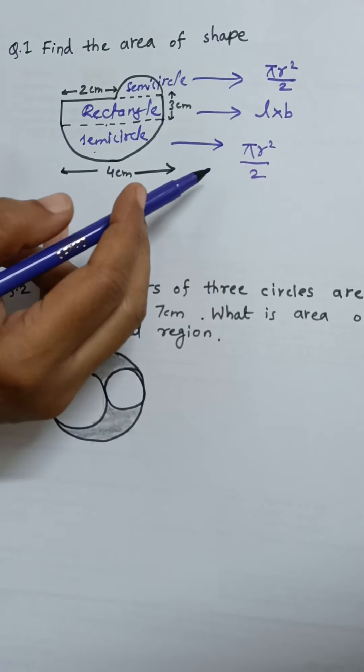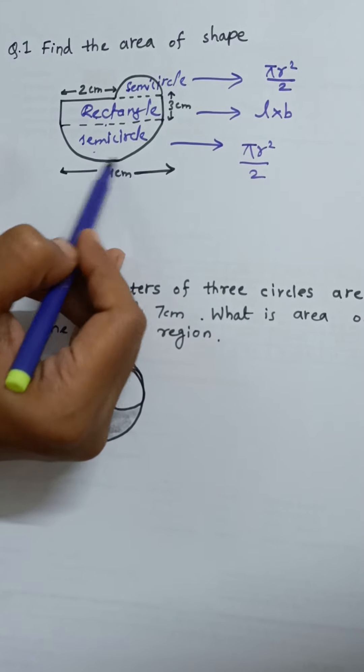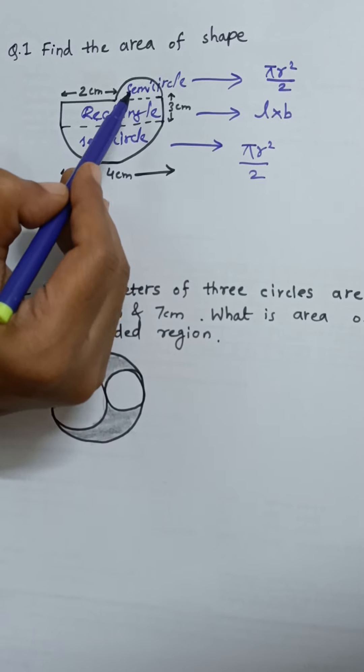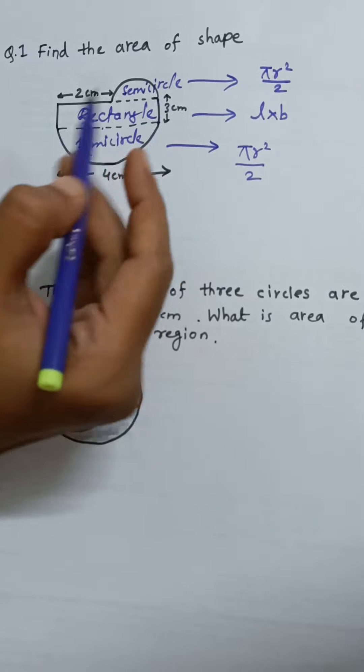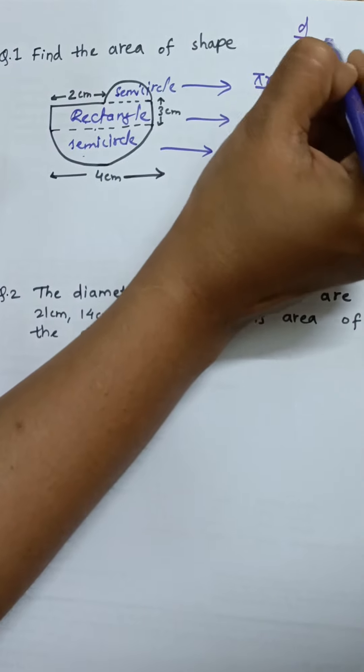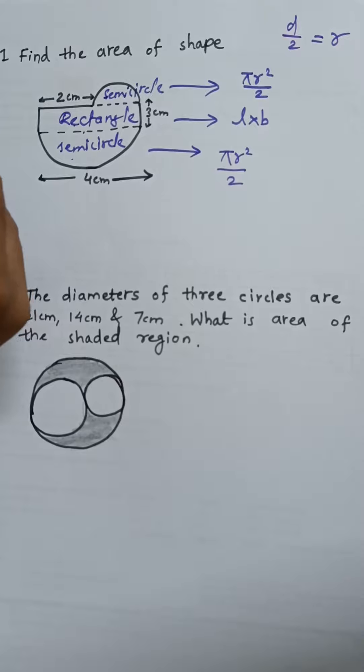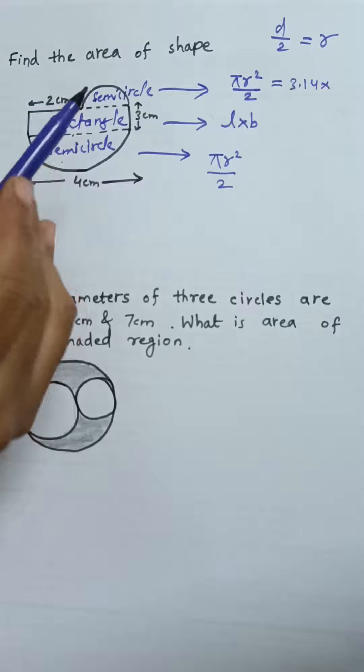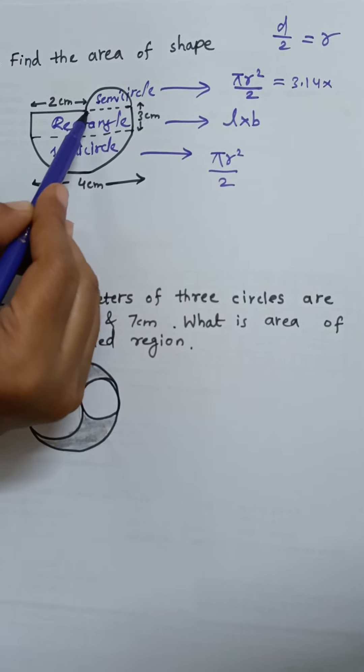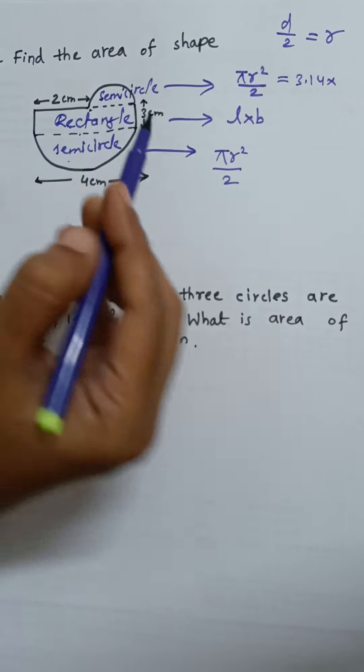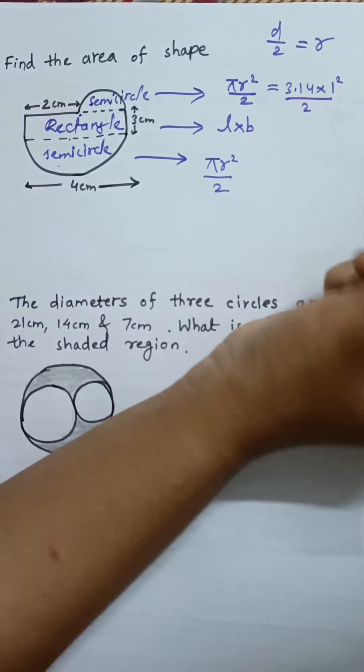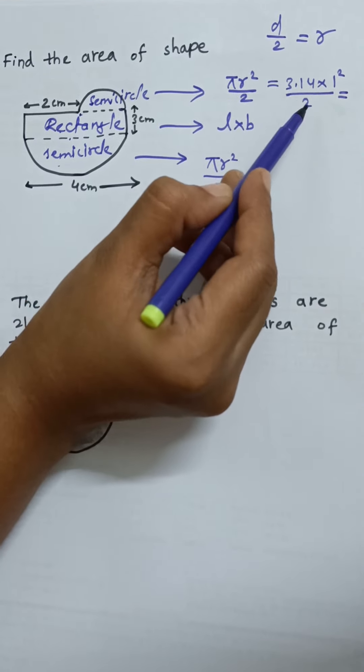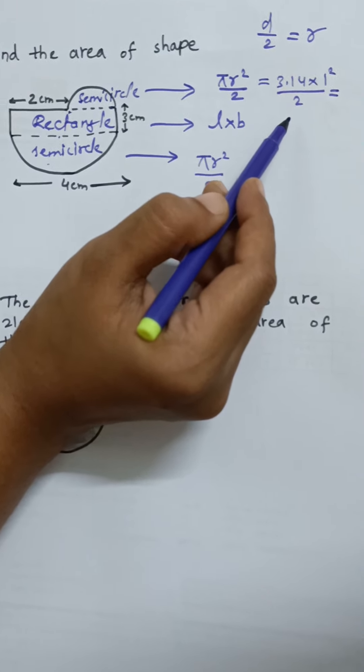Here if you see, the diameters are available. For this small semicircle, the diameter is 2. We'll take diameter divided by 2 to get the radius. Radius is nothing but half of the diameter. We'll take pi value as 3.14. In this case, if you notice, the radius is 2 centimeter, so 2's half is 1. One square by 2, 3.14, one square is one, and we have to divide it by 2.